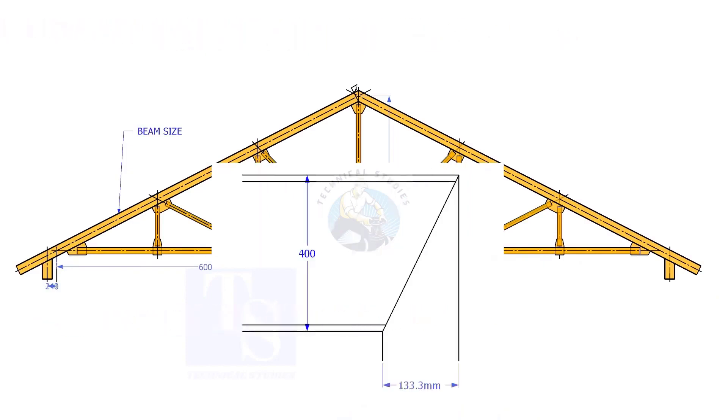Proportionate to the span and the height, the cutback for a 400mm wide beam is 133.3mm.